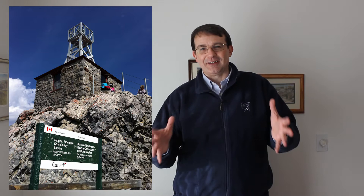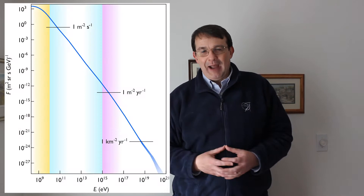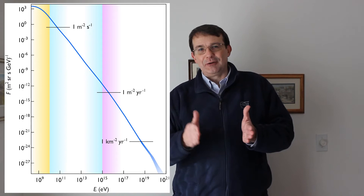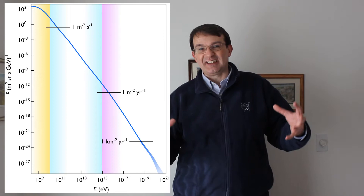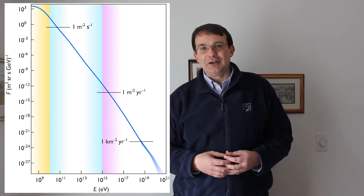That meant people built their detectors on the tops of mountains — you can actually see one near Edmonton if you go to Banff and take the gondola up to see the site of the old Sulphur Mountain cosmic ray observatory. The alternative was putting your detector in a balloon, but as you go up in energy you get fewer and fewer cosmic rays, so you need a bigger and bigger detector. On top of a mountain or launched from a balloon, you're pretty limited in the size of detector you can build.